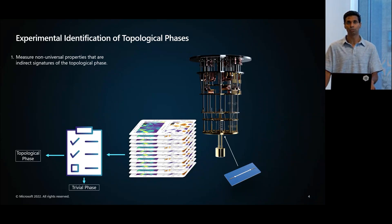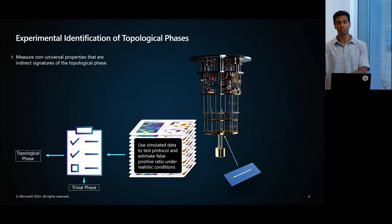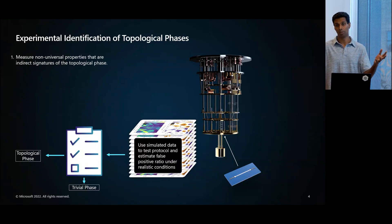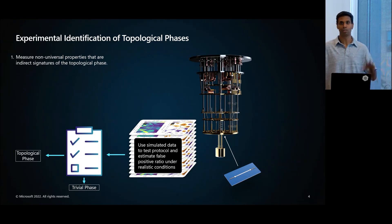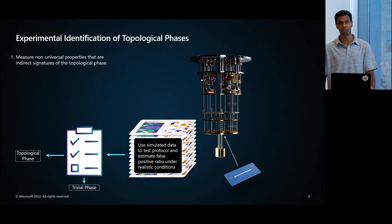Why would we do this and when is this useful? We're going to test this using simulated data under realistic conditions, and estimate the probability that you might pass—satisfy all the criteria—even if you weren't in the topological phase. We design the protocol, or improve it if necessary, so that it weeds out so-called false positives, making the false positive ratio as low as possible. We developed the protocol so that we would have very few false positives and would with high probability identify a topological phase.